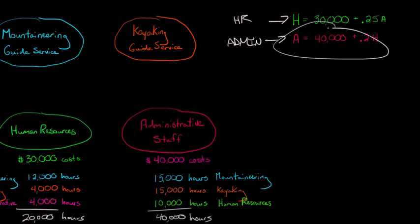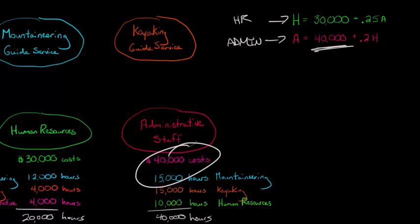Similarly, administrative staff costs are the pre-allocation of 40,000. And then we're adding one-fifth of the HR costs, which is the 4,000 hours used by the admin staff divided by the 20,000. So now we can just solve these equations.